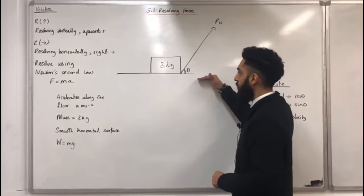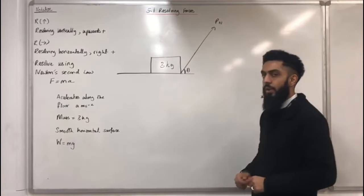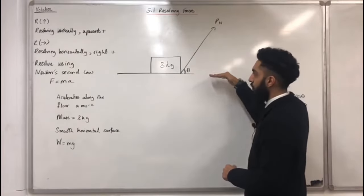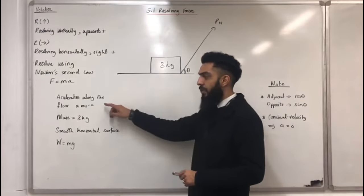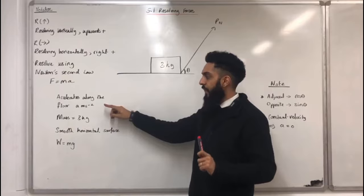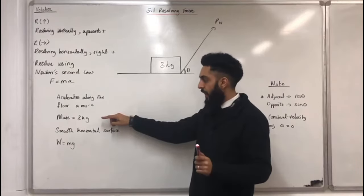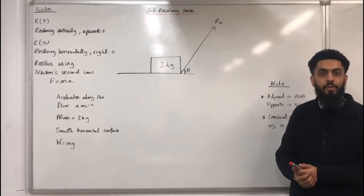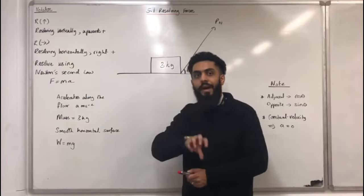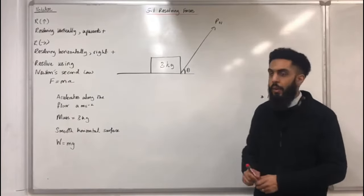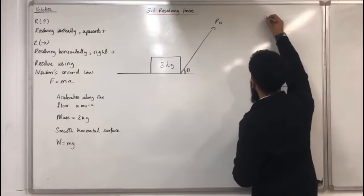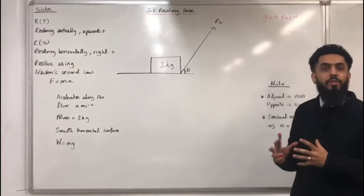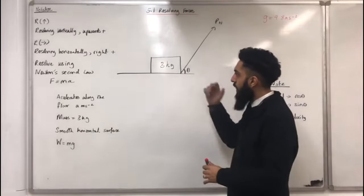Here we have a horizontal surface and a box on that surface. There's an applied force P Newtons acting at an angle theta to the horizontal surface. The box accelerates along the floor at 8 metres per second per second. The mass is 3 kg and the horizontal surface is smooth, meaning there is no friction. The weight is given by mass multiplied by G, where G is 9.8 metres per second per second.